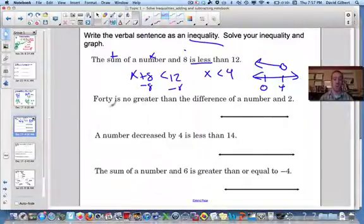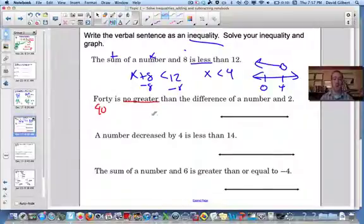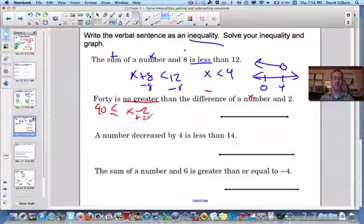All right, so 40 is no greater than. If it's not greater, that means it has to be less than or potentially equal to, but not more than. The difference of, so that's subtraction, a number and 2. So x minus 2.